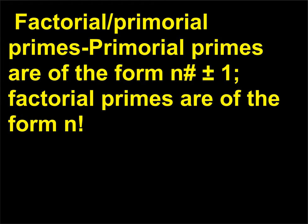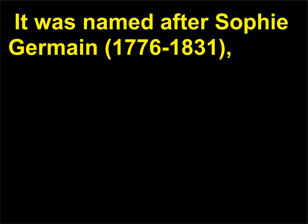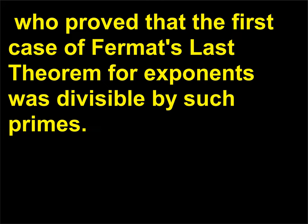Factorial/Primorial primes: Primorial primes are of the form N# plus or minus 1, factorial primes are of the form N! plus or minus 1. Sophie Germain primes: This is an odd prime P for which 2P+1 is also a prime. It was named after Sophie Germain (1776-1831), who proved that the first case of Fermat's last theorem for exponents was divisible by such primes.